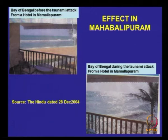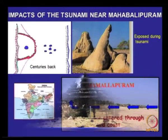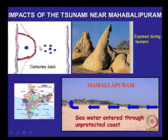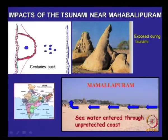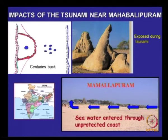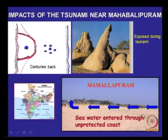This is Mahabalipuram, a famous tourist spot, and this is how it looked during the tsunami from the balcony of a hotel — where you could see the beach, now you see only waves. During the tsunami, as I said, the water level receded into the ocean, which exposed some relics — centuries back there were some temples and other structures which had sunk and got buried, and those were exposed during the tsunami. The sea water entered through the unprotected coast and there were problems in this stretch.